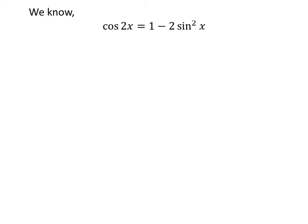We know the famous trigonometry identity: cosine of 2 times x is equal to 1 minus 2 times the square of sine of x. The proof of this trigonometry identity has been explained in the video appearing in the upper right corner of this video. The link of the video is also given in the description section.